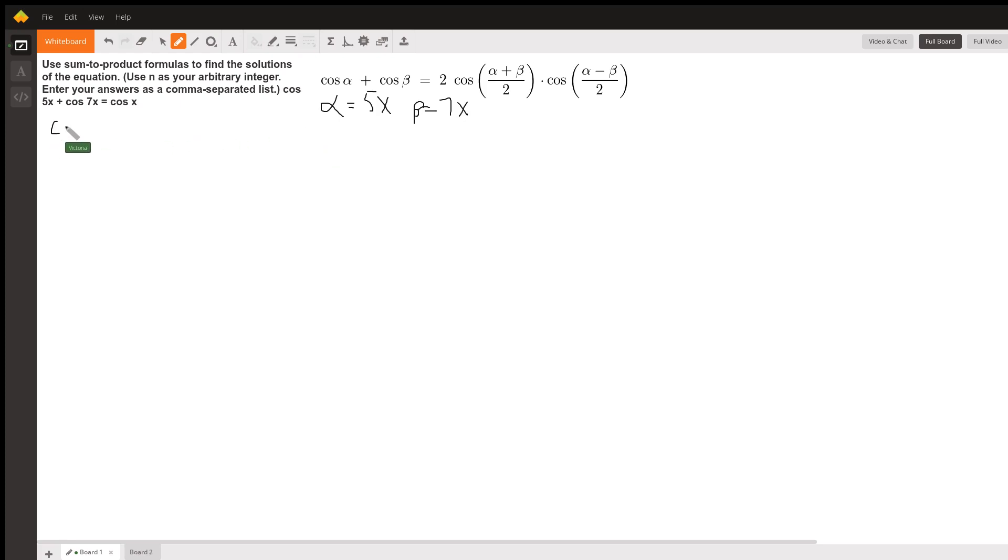And when we plug this into the formula, we get that the cosine of 5x plus cosine of 7x is 2 times the cosine. Now, I'm going to do alpha plus beta, which is 12x divided by 2 is 6x, times the cosine. And now I'm going to do alpha minus beta, or 5x minus 7x, which is minus 2x over 2 is minus x. Now, because cosine is an even function, that means that the cosine of negative x is just equal to the cosine of positive x.